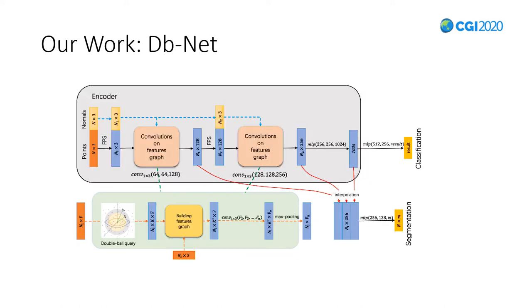DBnet follows the design that the hierarchical structure is composed of a set of abstract layers. Each layer consists of several operations and produces a subset of input points with newly learned features.